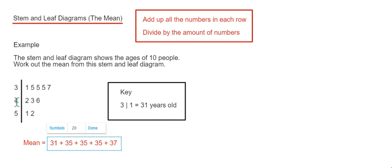On our next row we have all the numbers in the 40s. Our next age is 42, then we've got 43 and 46.